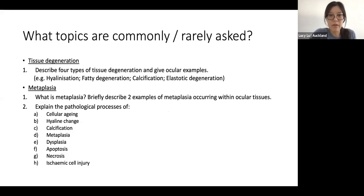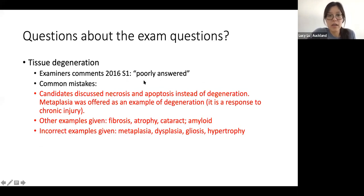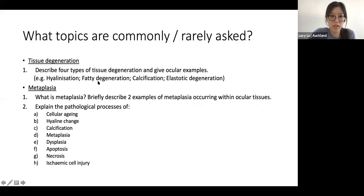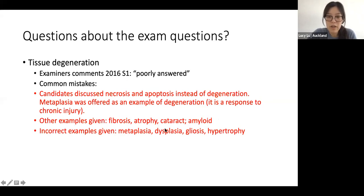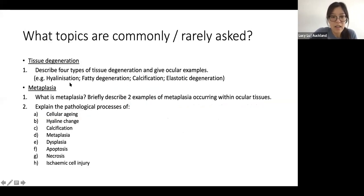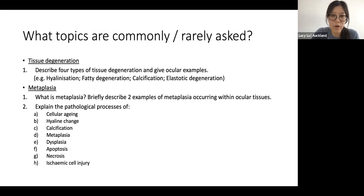I thought the exam questions were reasonably clear, but I found examiner feedback I didn't really understand. In the 2006 paper, the question on tissue degeneration was considered very poorly answered. The common mistakes were people using different terms that didn't come under the umbrella of tissue degeneration. I wasn't sure if fibrosis, atrophy, cataract, or amyloid were correct examples. Hyalinization, fatty degeneration, calcification, and elastotic degeneration definitely are correct, but I couldn't find many resources listing more than four types.